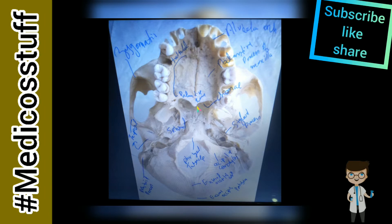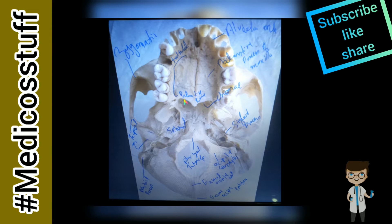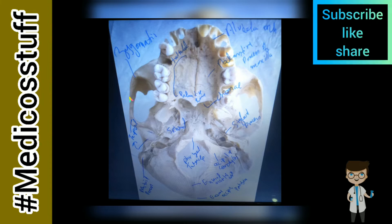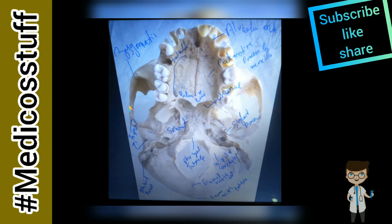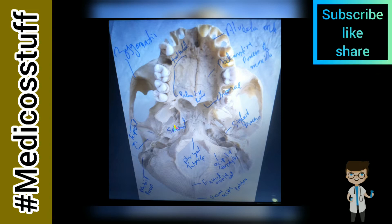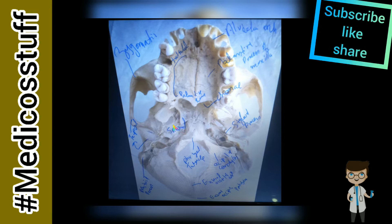Below the palatine bone you can see two holes going inward the Norma Basalis. These two holes are known as choanae (C-H-O-A-N-A-E). This bone is known as the zygomatic bone. At the backward side, the zygomatic bone attaches with the temporal bone. This bone is known as the sphenoid bone, where we will study the foramen later on.